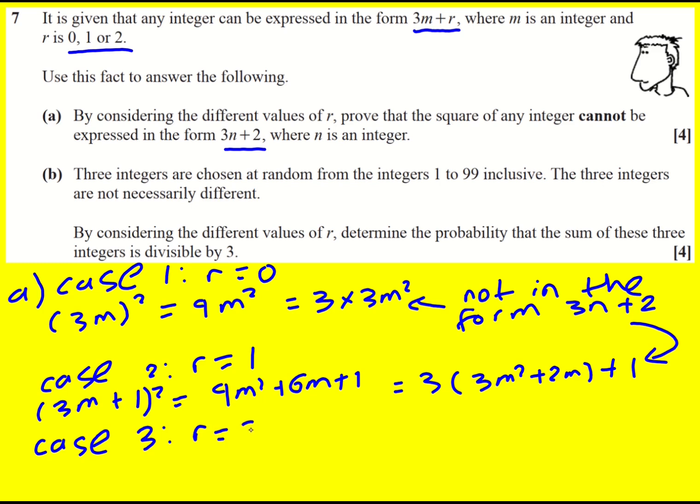Case 3. So for me, this is like, we're doing a direct proof here, but there's also this little hint of exhaustion because we're looking at these three separate cases. 9m squared plus 12m plus 4. Okay, this one's the most involved. So it's going to be 3 times 3m squared plus 4m. And we could factorize out a 1. No, sorry, factorize out 3, but we have a 1 here, and that leaves us a 1. So it's in the form 3n plus 1 again. And it's also, therefore not in the form 3n plus 2.